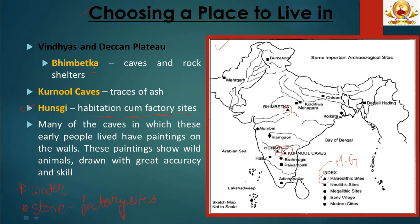Habitation sites are where early people used to live. Bhimbetka, in present-day Madhya Pradesh, is one such site. Habitation sites include caves and rock shelters, as natural caves provided shelter from rain, heat and wind. These are found in the Vindhyas and the Deccan Plateau. Traces of ash found in Kurnool Caves suggest people were familiar with the use of fire, which might have been used as a source of light, to cook meat, and to scare away animals.